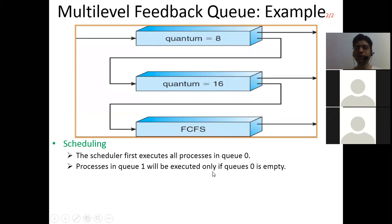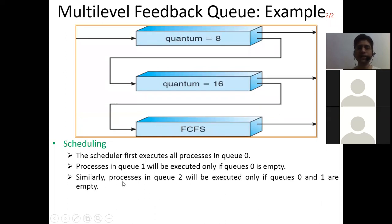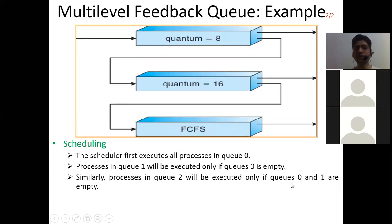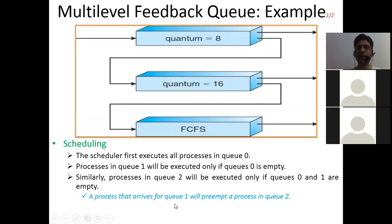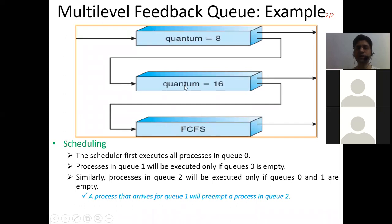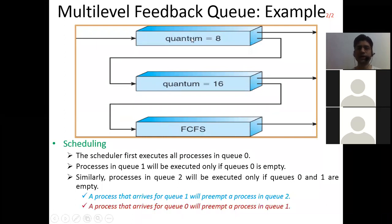Process in Q1 will be executed only if Q0 is empty. Similarly, process in Q2 (FCFS) will be executed only if Q0 and Q1 are empty. A process that arrives for Q1 will preempt a process in Q2 — suppose there was no process for Q0 and Q1, and a Q2 process was running, but a process arrived for Q1. It will preempt the FCFS process because Q1 has higher priority than Q2. Similarly, if a process arrives for Q0, it will preempt the process currently running in Q1, because Q0 has the highest priority.